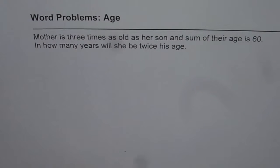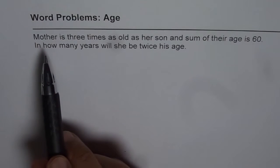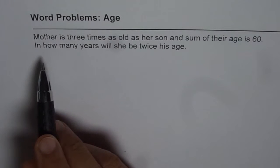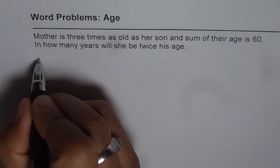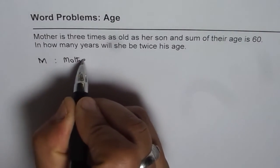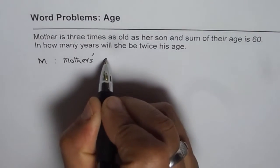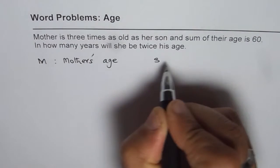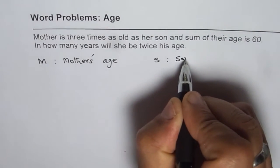In this question we are talking about the age of mother and son. So let us define variables for that. We say let M be mother's age and let S be son's age.